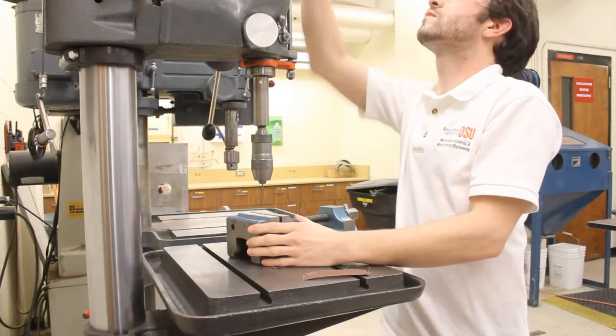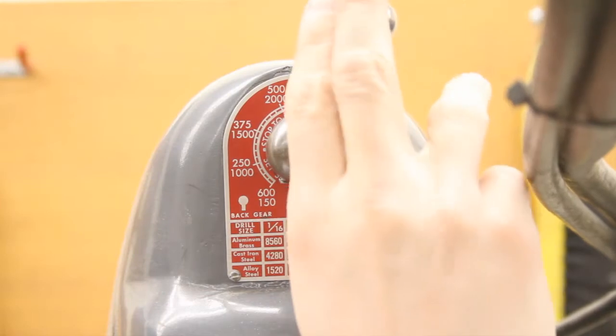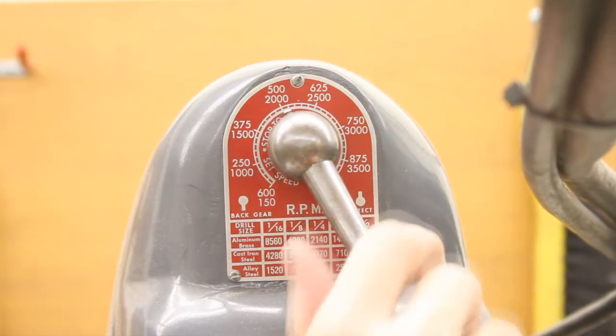Place the part in a small vise on the drill press. Adjust the drill speed to 2000 RPM, then drill the hole.